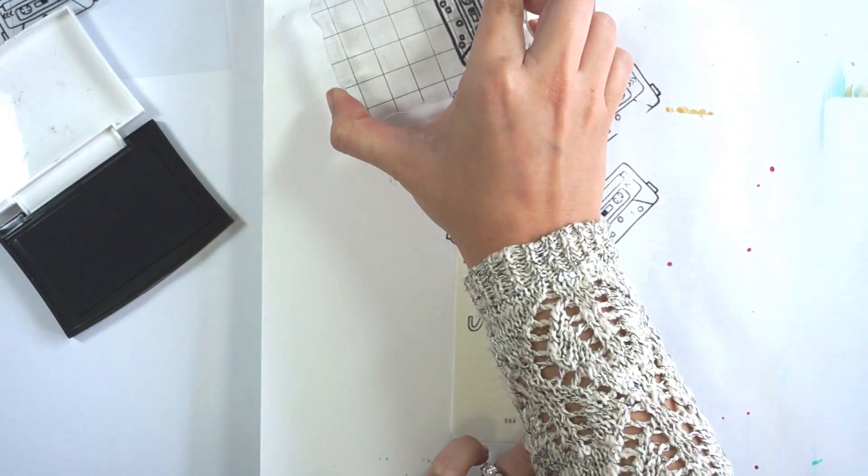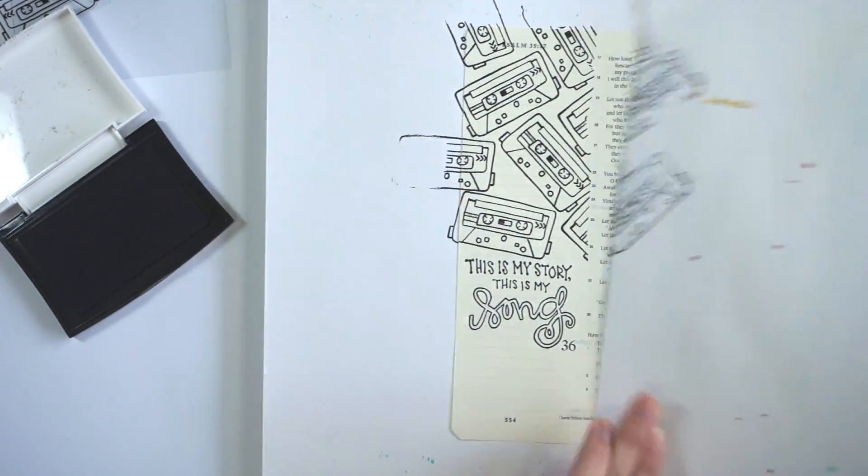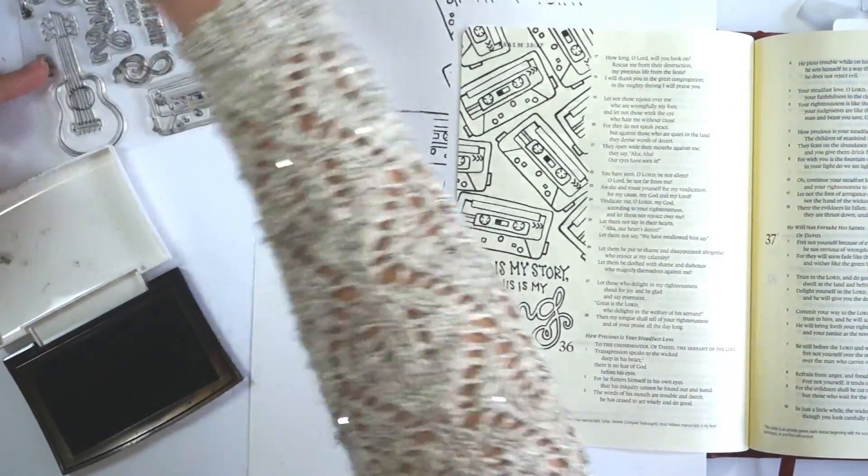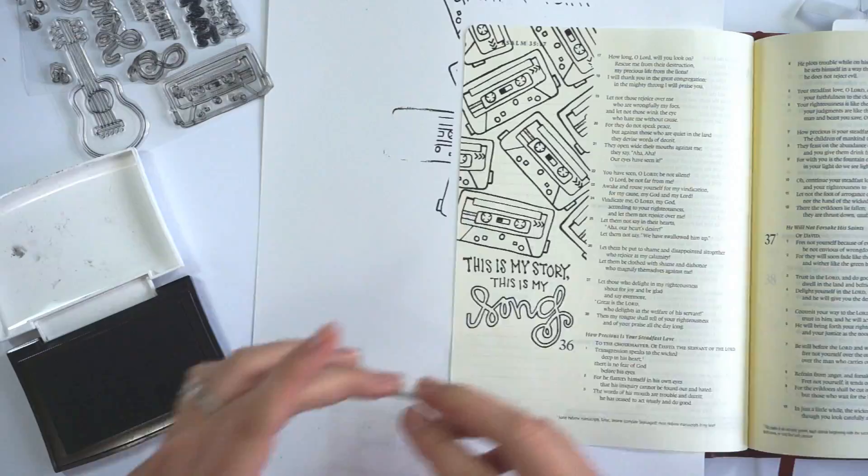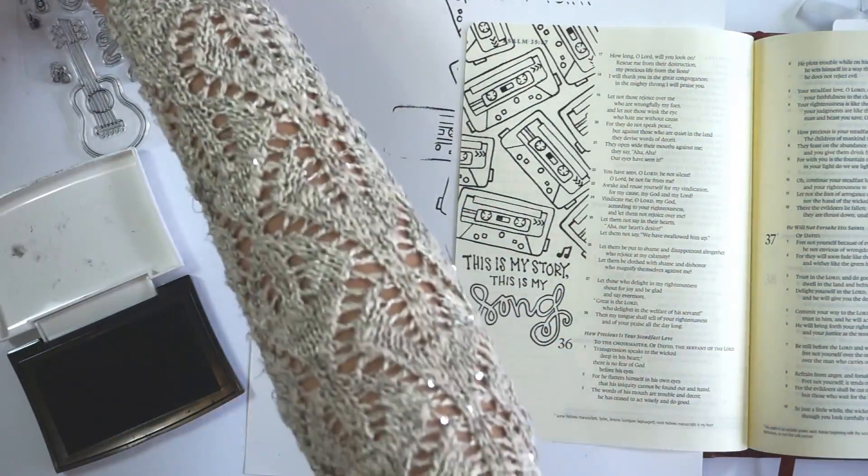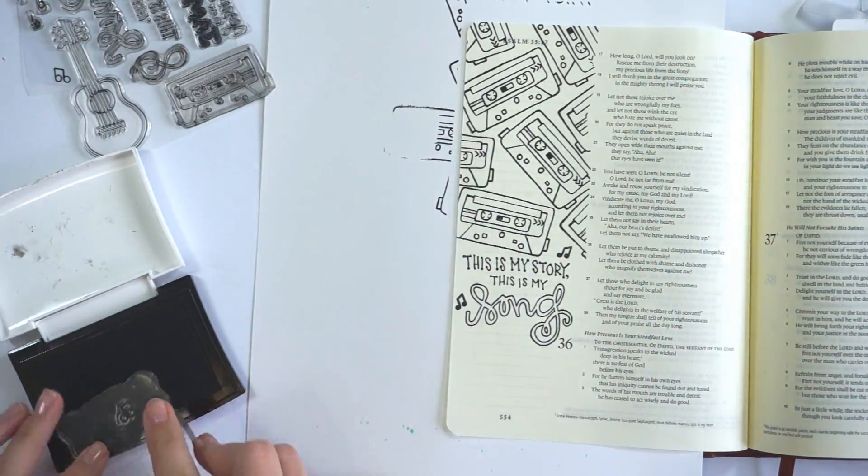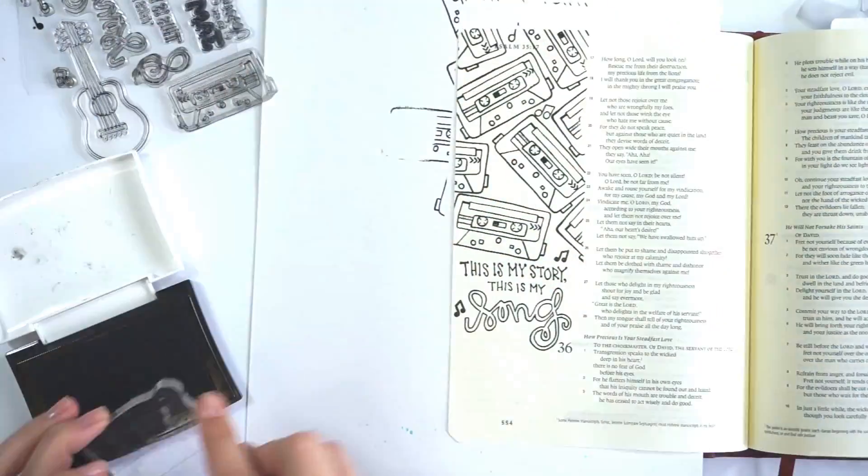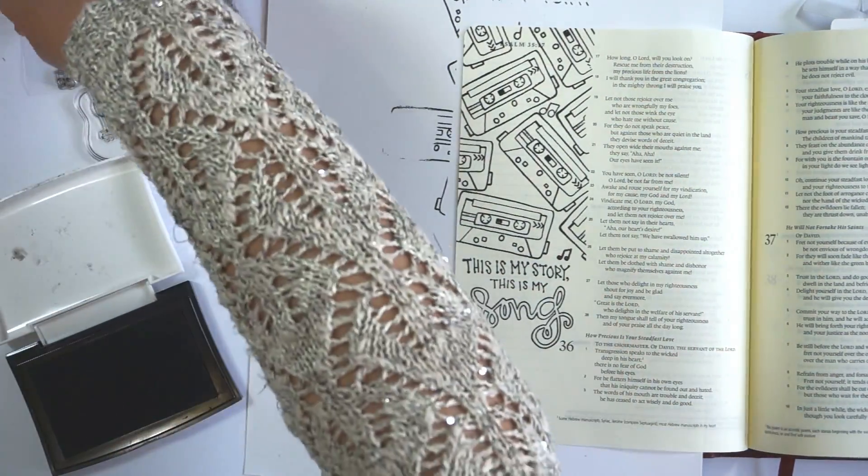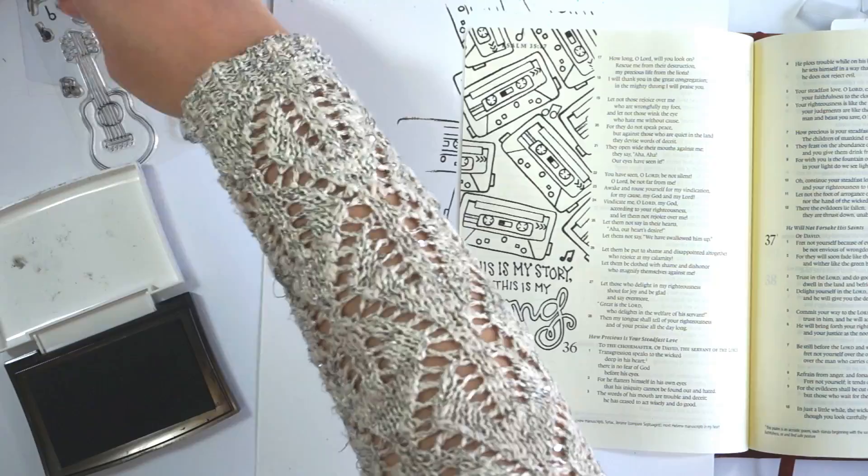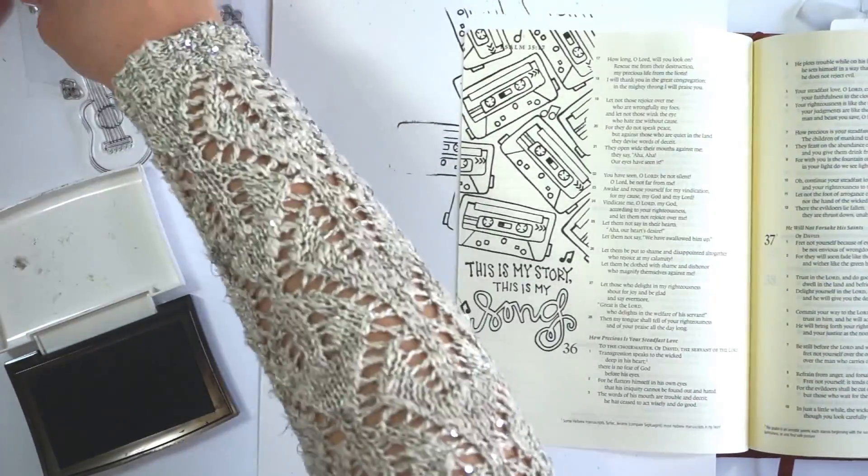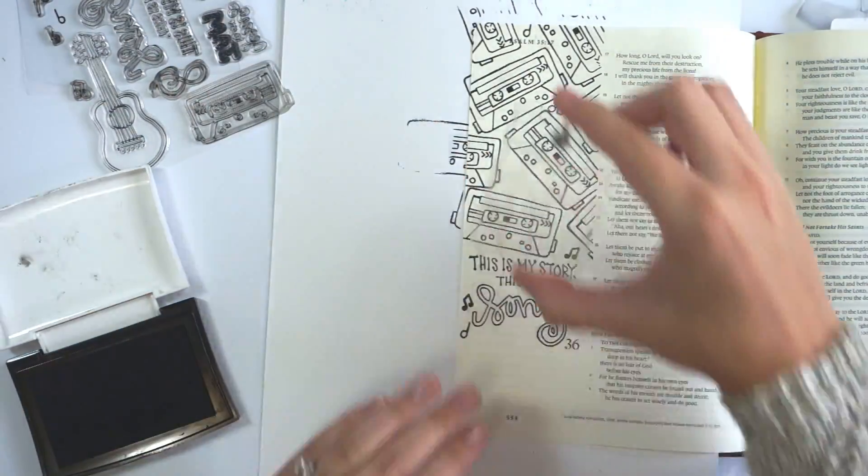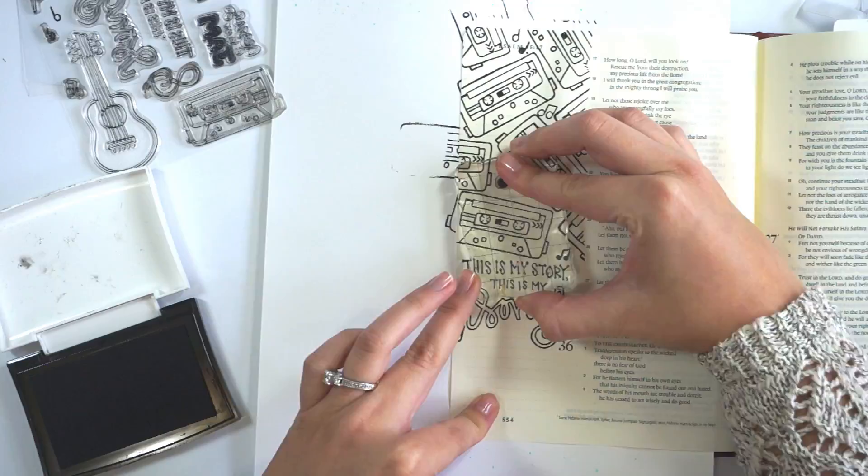I'm filling in the top two-thirds of the margin, and then I'm going to take the little musical note pieces that are in that stamp set and just fill in some of the smaller areas in between the little cassette tapes. It's almost like a custom pattern paper that's going to be at the top here, and then at the bottom I will do just a simple prayer journaling down at the bottom there.